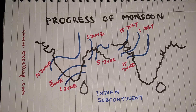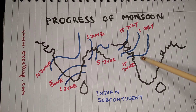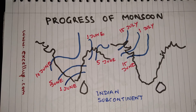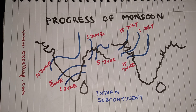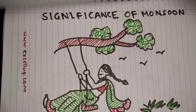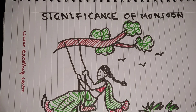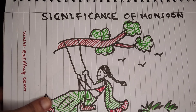After that, most of both branches of monsoon meet at the north western portion of the Ganga plain by the 15th of July. This is when almost all parts of Uttar Pradesh get rains. Delhi and neighboring areas get rain by the first week of July. By the first week of July, the western part of the country — Rajasthan, Gujarat, and Punjab — also get rain.